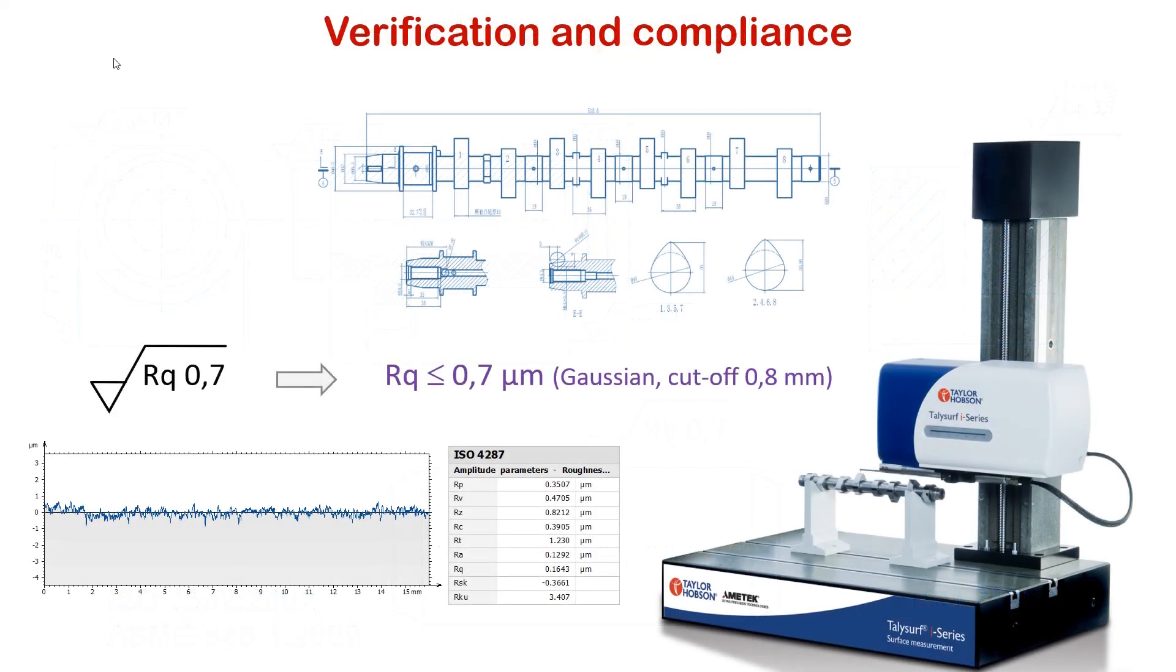The metrologist responsible for verifying a workpiece on a production line will sample some parts to measure them. He or she will rely on specifications written on the drawing and will use a profilometer or any other suitable means to measure profiles, or sometimes surfaces, and then calculate the surface texture parameters that are specified, to finally compare their value to the tolerance limits.